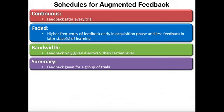Now let's look at various practice schedules. We can do either knowledge of results or knowledge of performance in different schedules: continuous, faded, bandwidth, and summary feedback schedules. Continuous feedback is when augmented feedback is given after every trial, or even during the trials — you're always giving it. Continuous feedback is not ideal for later learning stages. Once the person is in the associative and especially autonomous stages of learning, you don't want continuous feedback. It may be okay in initial novice stages, but we want to taper off feedback as the person learns more.